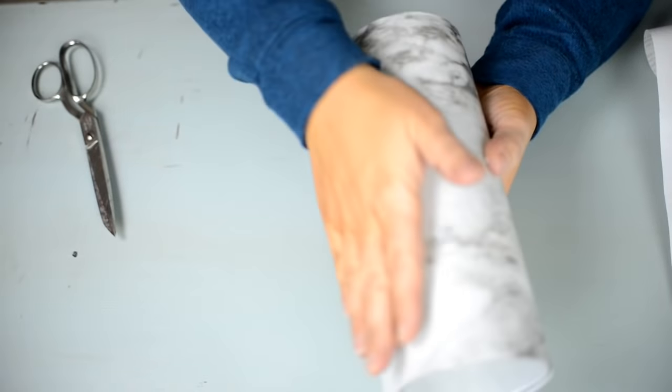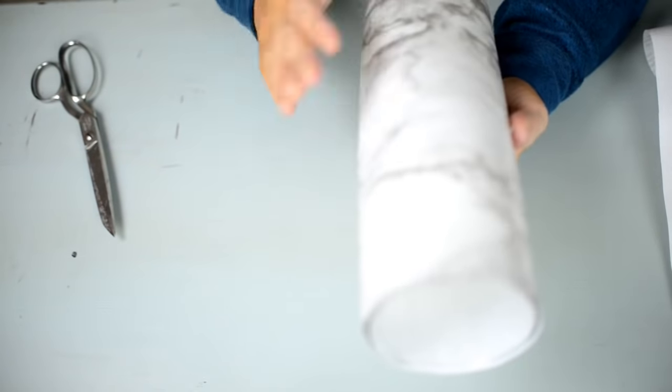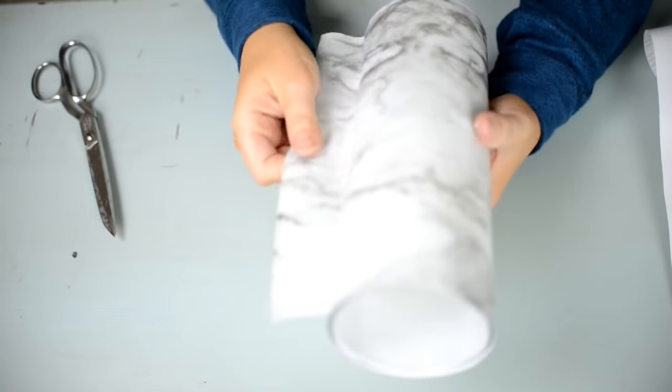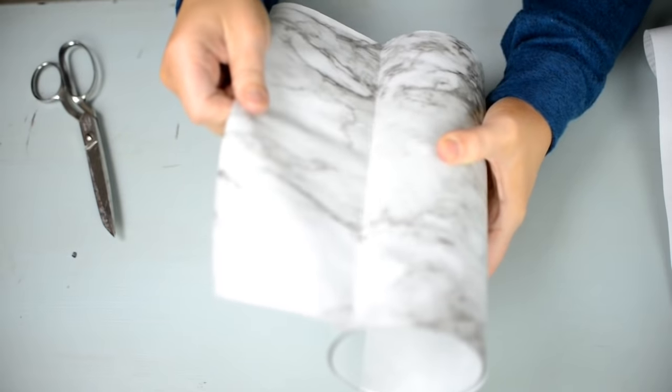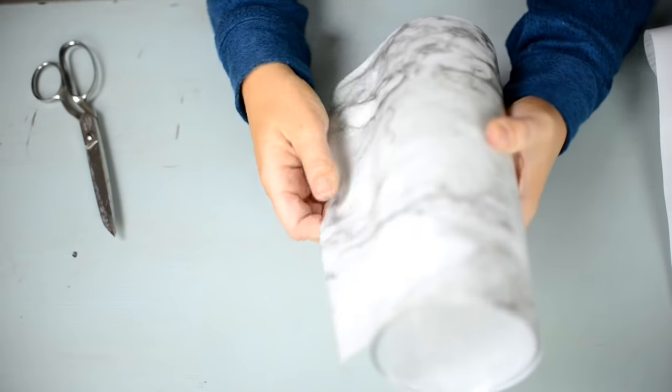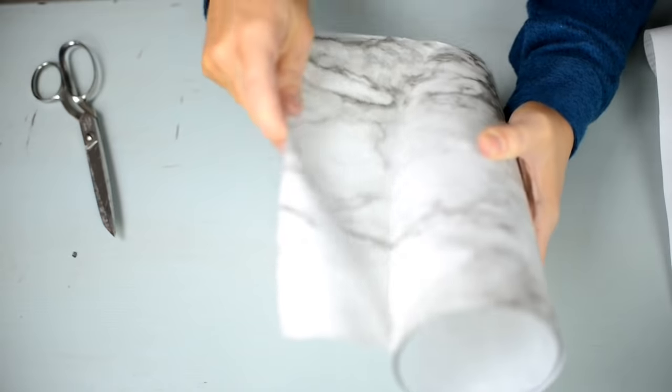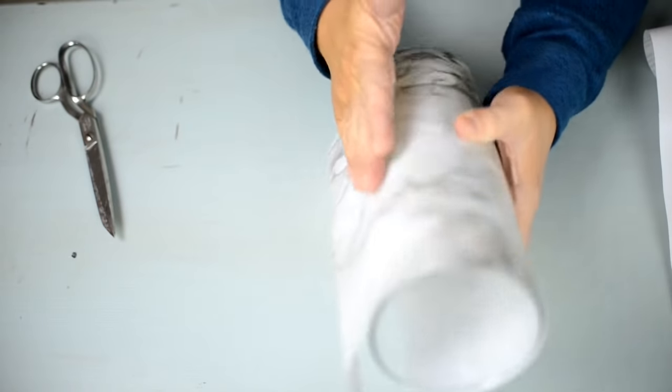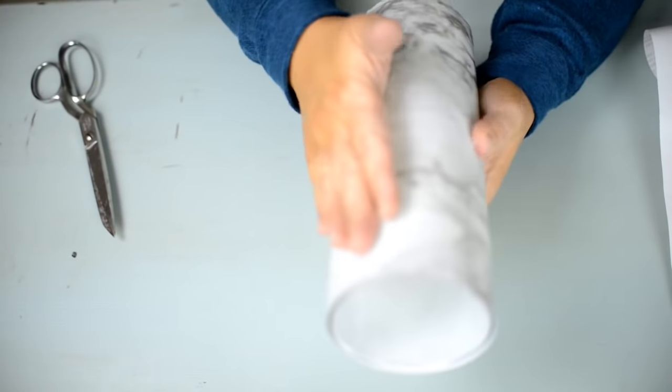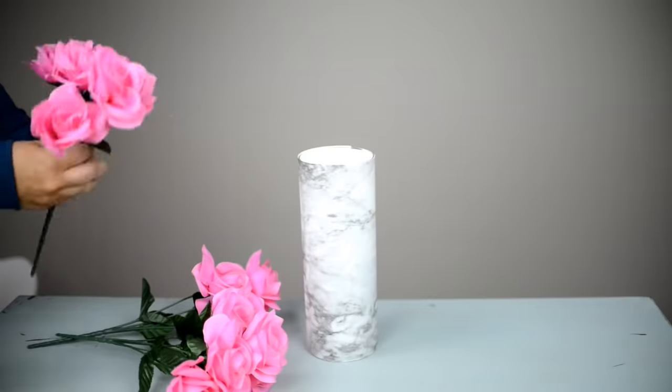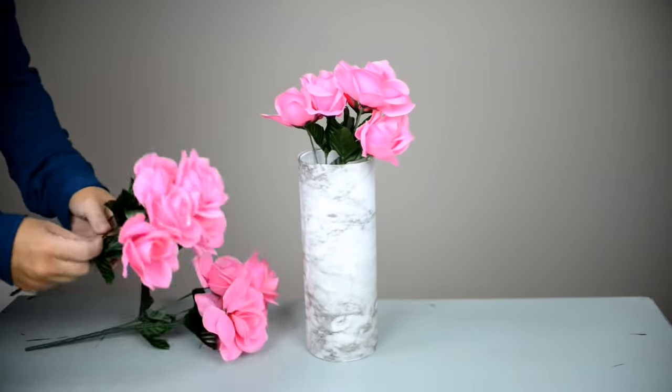Pull it up if I have any bubbles and keep smoothing it until it looks nice and neat. Wherever they connect, you want that to be on the back of your vase. From there, I'm just going to put in my stems, and I just think this looks so cute and fresh.